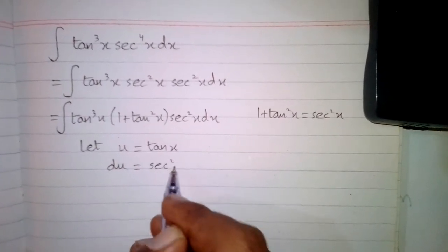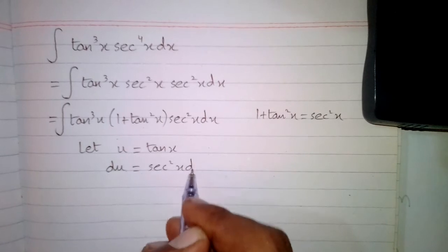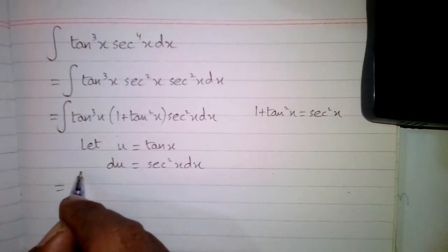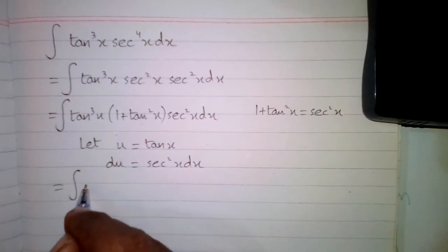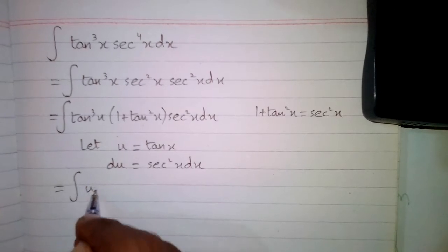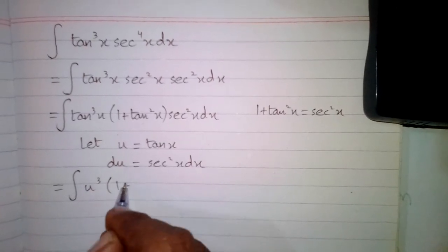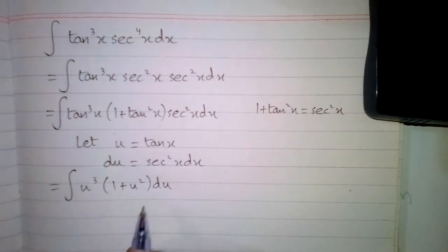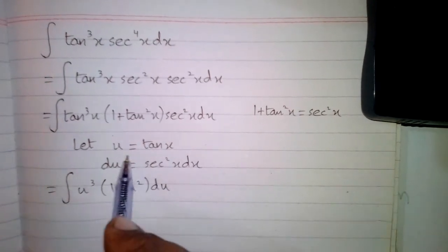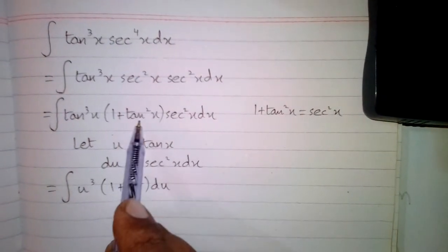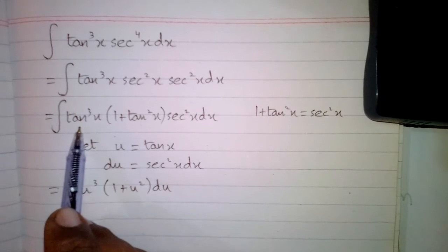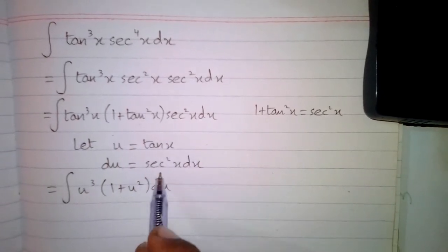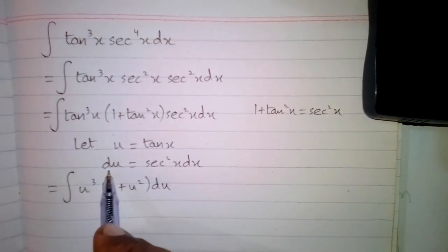Now we will suppose u = tan x, and the differential du is equal to the derivative of tan x, which is sec²x dx. So the above integral can be written as the integral of u³(1 + u²) du, where we have put u in place of tan x, and du in place of sec²x dx.